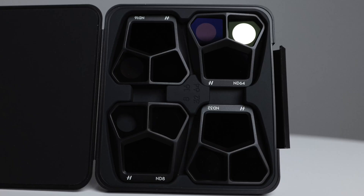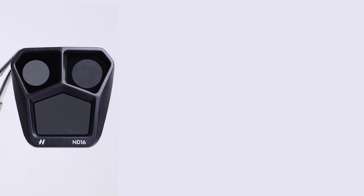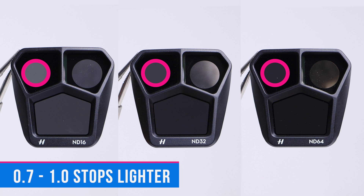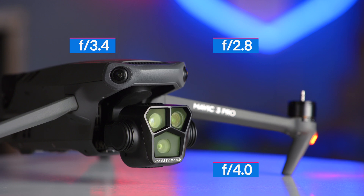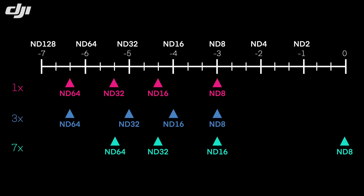The DJI filter set sells for $179 and comes with ND8, ND16, ND32, and ND64. The results showed that the ND16, ND32, and ND64 over the 7x camera were between 0.7 and one stop lighter than the filters over the 1x and 3x cameras. This meant that using f/4 on the 1x and f/2.8 and f/3.4 on the 3x and 7x respectively, we could seamlessly change between all three cameras and get equally exposed footage. The accuracy of filter density was well within our margin of error — within one-third of a stop of the advertised density.